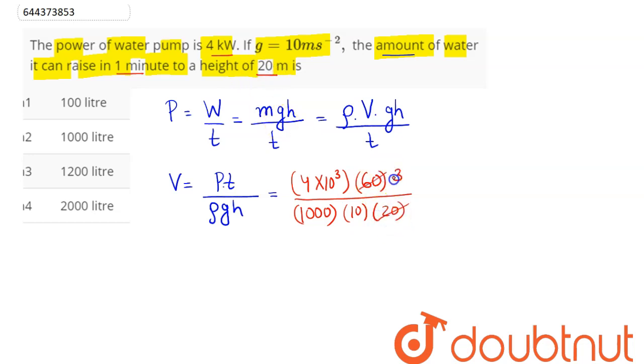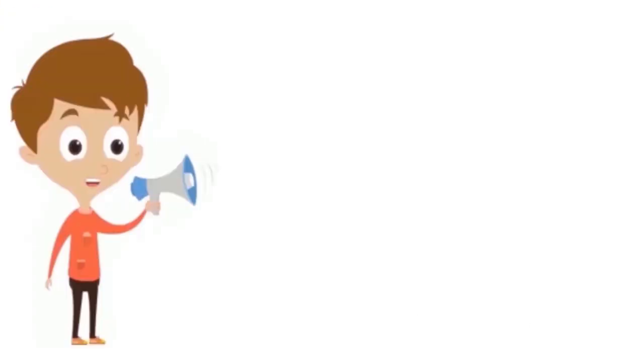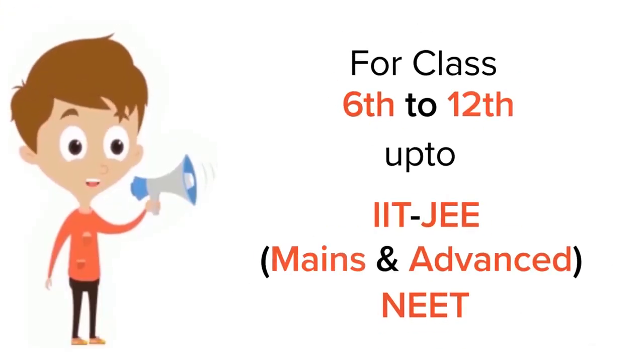So this 20 cancels 60 by 3, and 1000 and 1000 cancels out. So this here is 12 by 10, which is 1.2 cubic meter, which is equal to 1200 liter. So 1200 liter means option number 3 is the correct answer. Hence 3 is our answer.